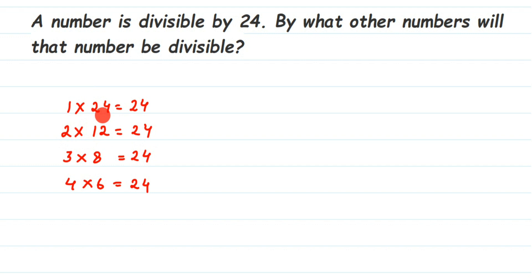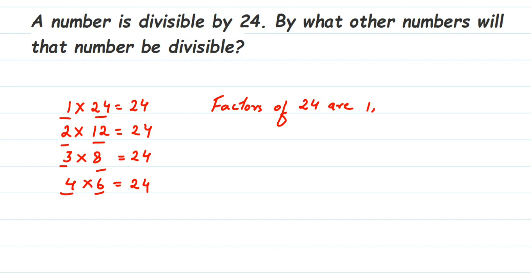I checked from 1 to 10 because 24 is a small number, so we can check all tables from 1 to 10. Now writing down the factors of 24 — just all the numbers from those pairs: 1, 2, 3, 4, 6, 8, 12, and 24. These are the factors of 24.